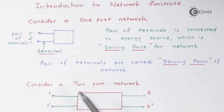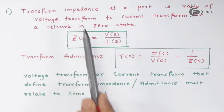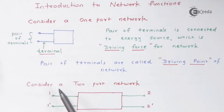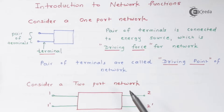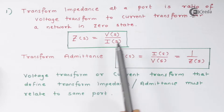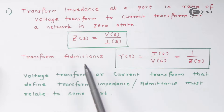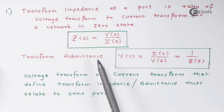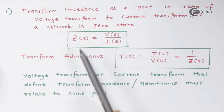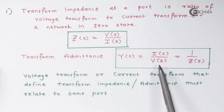For example, referring to a two-port network, if you want the input impedance — the transform impedance at port number one — you need the transform voltage and transform current at port one, both in the S domain. This is called Z11. You can also calculate Z22, which is V2(S) divided by I2(S). Similarly, transform admittance is current divided by voltage — exactly the opposite of impedance — so it equals one divided by Z.